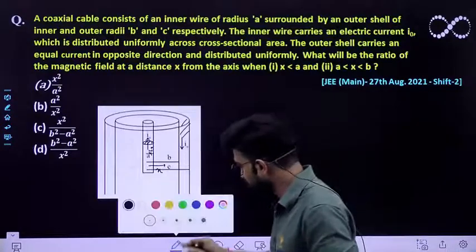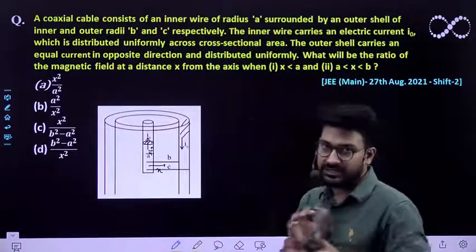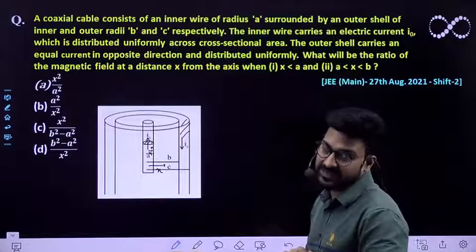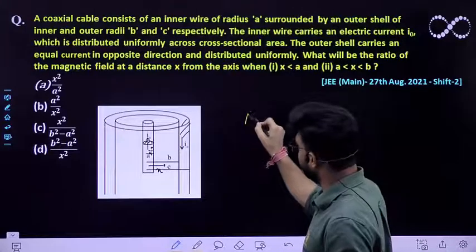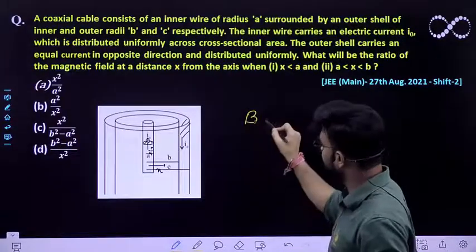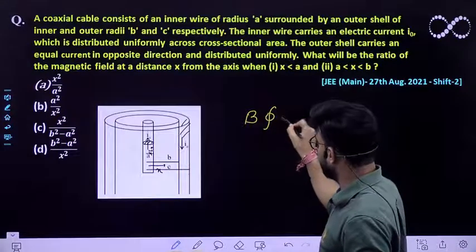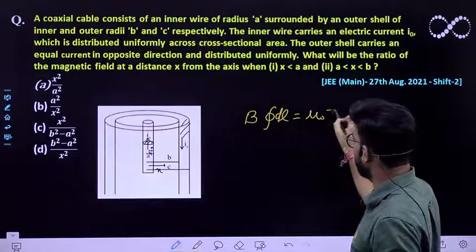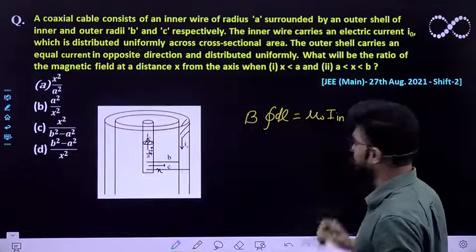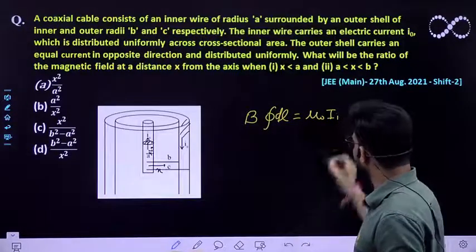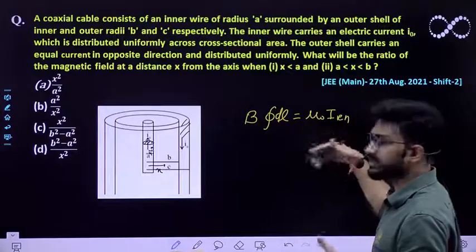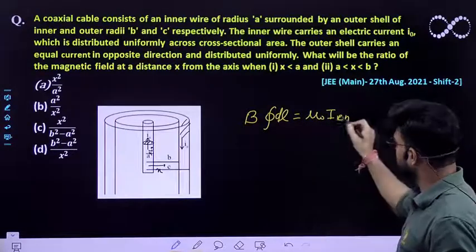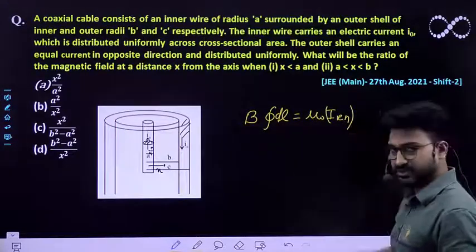We will be using Ampere's circuit law in order to find out the magnetic field at that particular point. Ampere's circuit law says that line integral of B dot dL must be equal to mu0 times the enclosed charge, or you can say mu0 I. So this is the enclosed charge within this line.